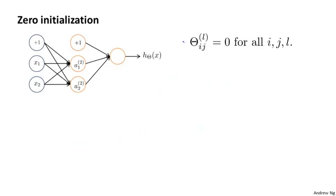Consider training the following neural network, and let's say we initialize all the parameters in the network to zero. If you do that, then at the initialization, this blue weight is going to equal that weight — they're both zero. And this red weight is equal to that red weight. And this green weight is going to equal the value of that green weight. What that means is that both of your hidden units, a1 and a2, are going to be computing the same function of your inputs. Thus for every training example, you end up with a21 equals a22.